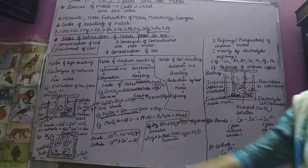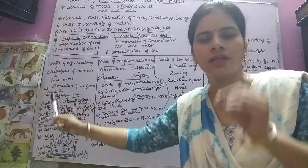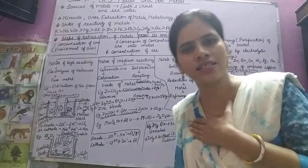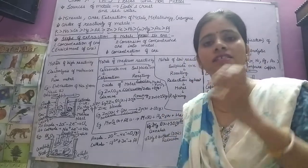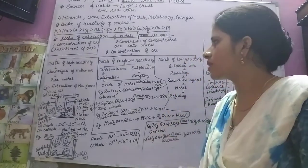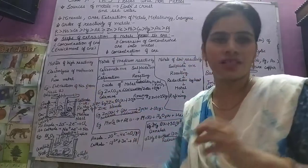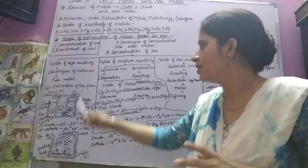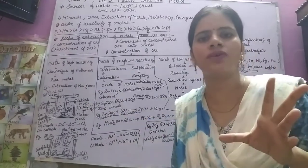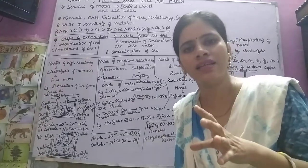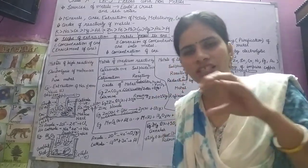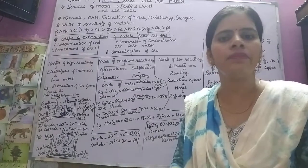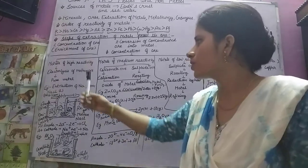For metals of high reactivity, the method that must be used is electrolysis. Electrolysis must be used for highly reactive metals. We perform electrolysis of the molten ore — molten means melted. The molten ore consists of ions, and ions are charge carriers that allow current to pass through them.